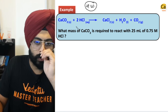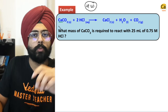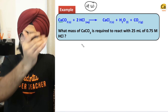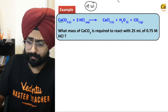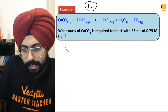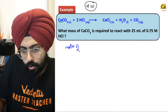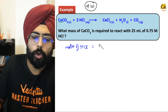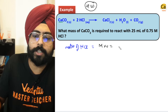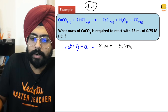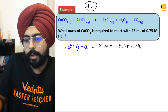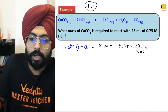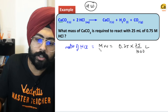The ratio of moles of CaCO3 versus HCl is 1 to 2. If you have 2 moles of HCl you need 1 mole of CaCO3. Moles of HCl are equal to molarity × volume = 0.75 × 25/1000, because volume must be in liters.